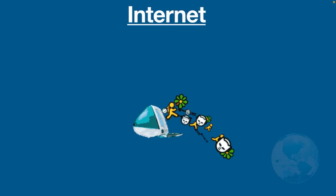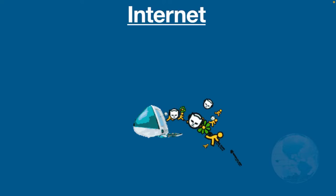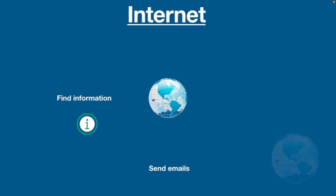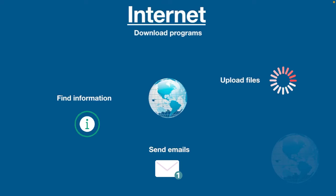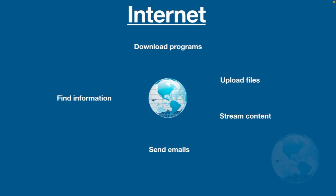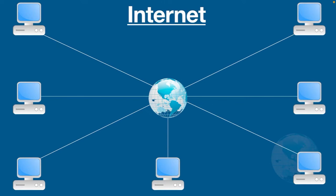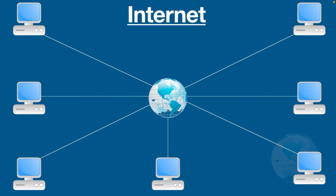If you are watching this video, you already know what the internet is. At its most basic level, we use the internet to find information, send emails, upload files, download programs, stream content, and much more. In simple terms, the internet is a worldwide system of interconnected computer networks in which people share information, communicate with each other, and get answers to almost any question in moments, no matter where they are in the world.